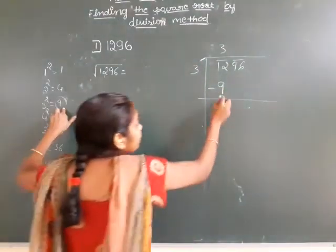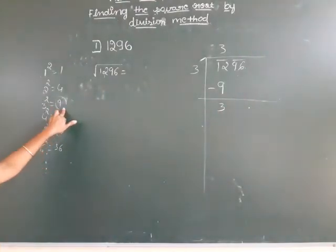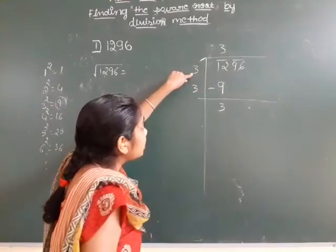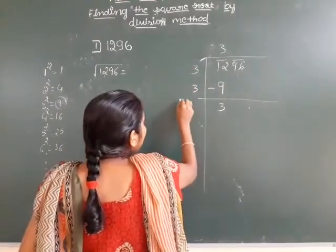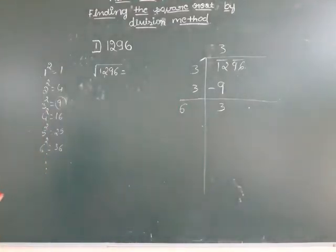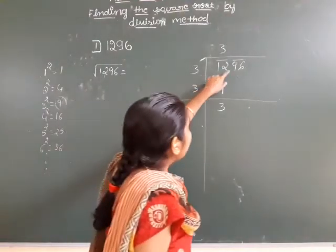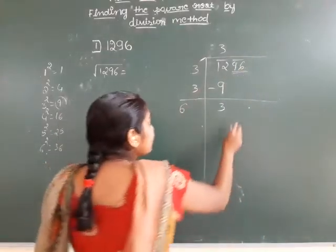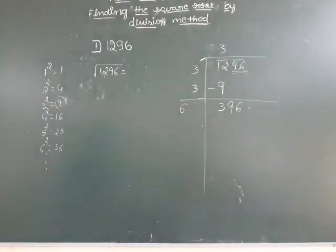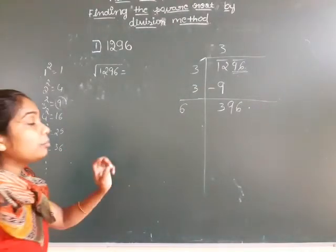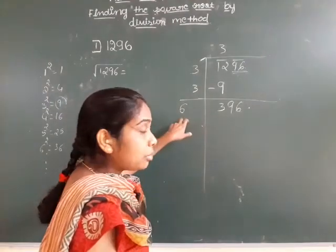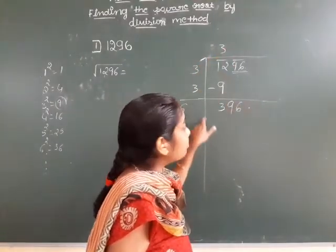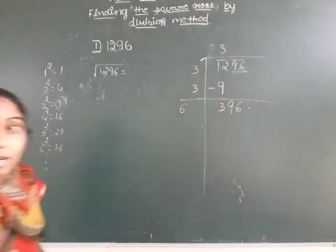Next step: bring down 96. So the number is 396.